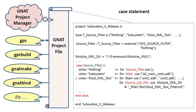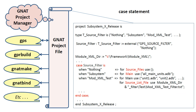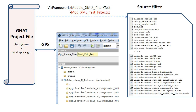The mod.xml test case introduces the source_list_file attribute, which identifies a file on drive V that contains a list of all units required to build all main programs specified with the main attribute. Here we see the list of units required to build every test program within mod.xml. The list of units in the file is generated by a script.